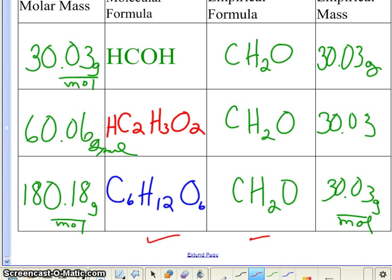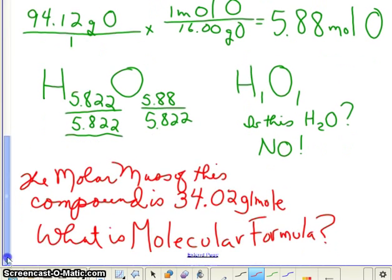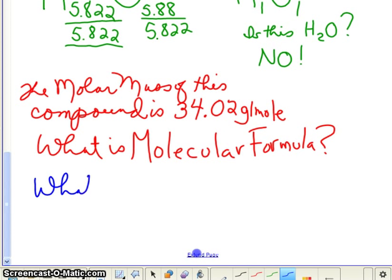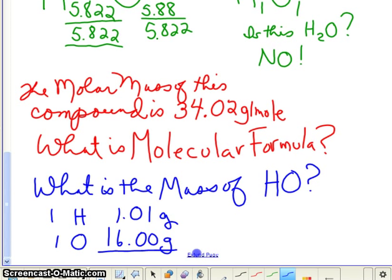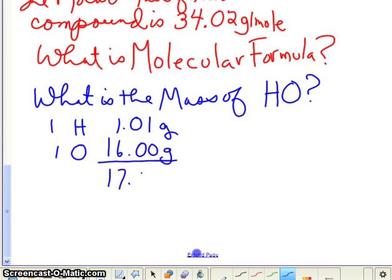So, for this problem, if we want to figure out what the formula, the molecular formula of the compound is, then what we can do is figure out, well, what is the mass of HO? So, one hydrogen, 1.01 grams, plus one oxygen 16.00 grams, so HO has a mass of 17.01 grams.